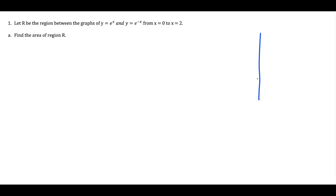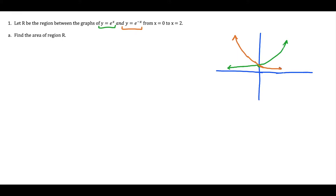For question one, the first thing we should do is get a rough sketch of what these graphs look like together. We have y equals e to the x sketched in green, and y equals e to the negative x in orange. These two functions have symmetry over the y-axis. We're looking from x equals zero to x equals two, capturing the region R between the orange and green curves.